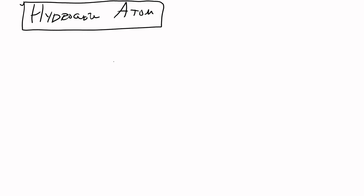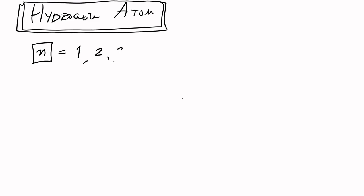Let's talk about examples of quantum numbers using the hydrogen atom, because it's a system that we can solve exactly. From there, we get these quantum numbers, and we generalize them for the rest of the periodic table. For the hydrogen atom, the state of the electron is given by four quantum numbers. The first is N, and N is a positive integer — 1, 2, 3, and so on. This is called the principal quantum number.